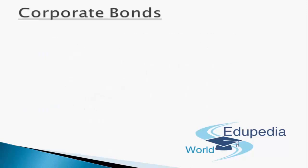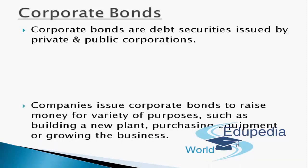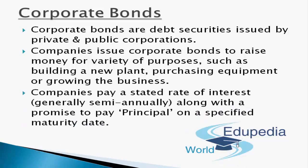Corporate bonds are debt securities issued by public and private corporations. Companies issue corporate bonds to raise money for a variety of purposes such as building a new plant, purchasing equipment, or growing their regular business. Companies pay a stated rate of interest — generally semi-annually — along with a promise to pay the principal on the specified maturity date.